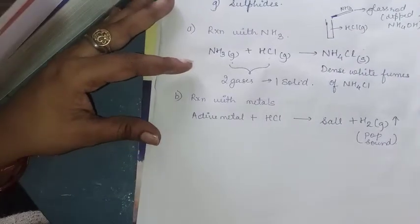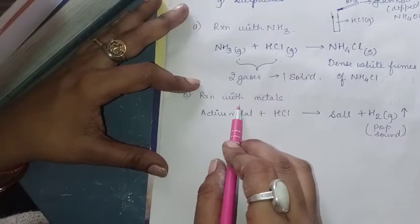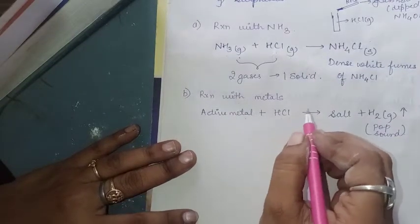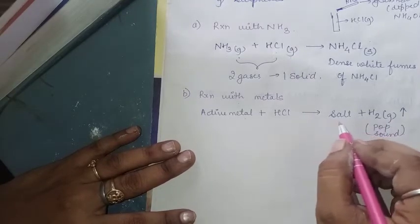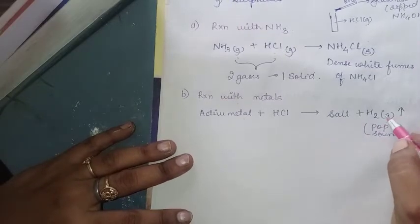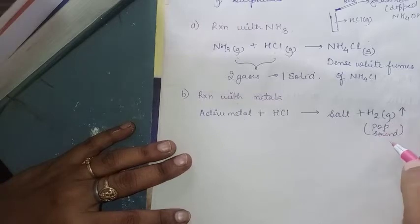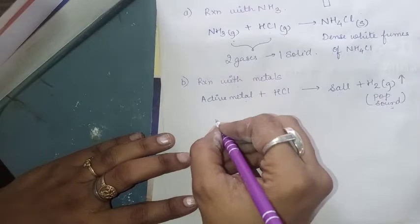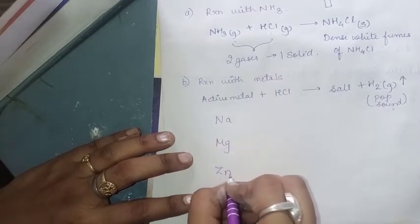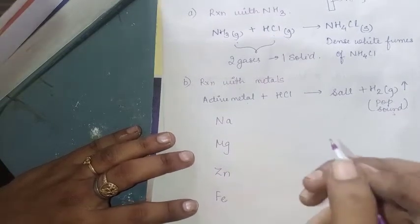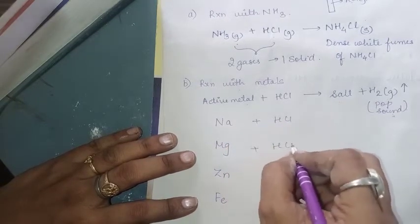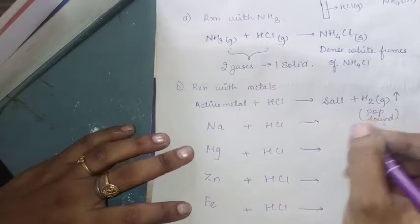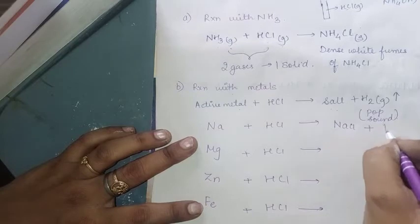The next reaction is with metals. Whenever we treat any active metal with an acid — H₂SO₄ or HCl — the product formed will be a salt along with hydrogen gas. The confirmatory test for hydrogen gas is that it gives a pop sound when it burns. Sodium, magnesium, zinc, and iron are all active metals that react with acid to form salt and hydrogen gas.